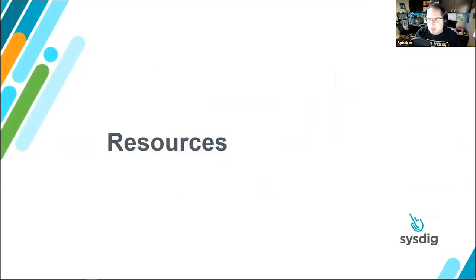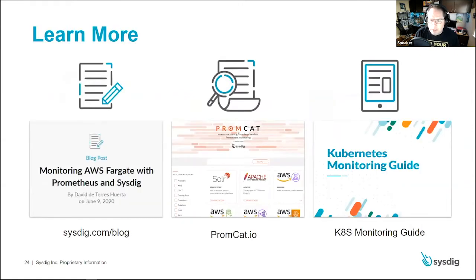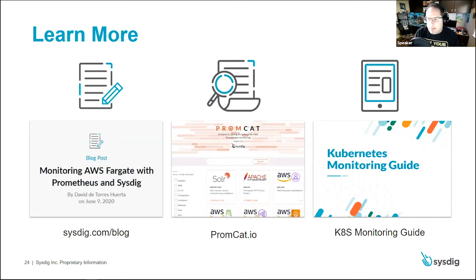Some resources: if you're interested in following Prometheus development and integrations, check out sysdig.com/blog — there's a blog post almost daily about Prometheus monitoring, Kubernetes monitoring, and securing Kubernetes environments and image scanning. I mentioned Promcat already. There's also a Kubernetes monitoring guide available in the resources section on sysdig.com — it's about a 50-page guide covering what Kubernetes is, the control plane, good alerts, best practices, and example deployments. We'll also be deploying an updated Prometheus monitoring guide in the coming month, probably November.